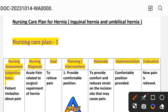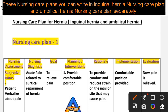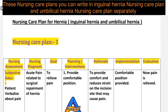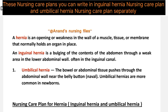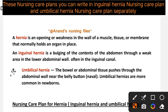A nursing care plan has different steps: nursing assessment (subjective and objective data), nursing diagnosis, goal, planning and intervention, rationale, implementation, and evaluation. These are our nursing care plan steps. First of all we will see a short introduction about hernia.